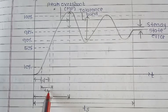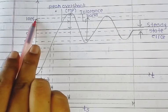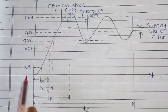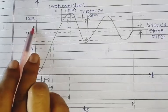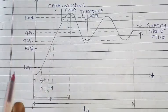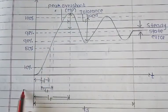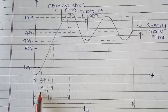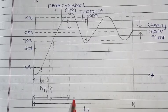For the underdamped system, rise time is defined as the time required for the response to rise from 0 to 100% of the final value in the first attempt. Where 0 to 100% increase is happening, that is the rise time for the underdamped system. Its formula is: Tr equals pi minus theta upon omega-d.